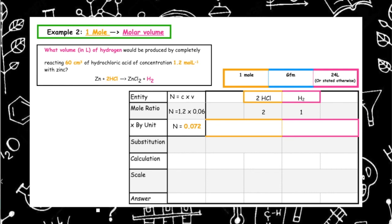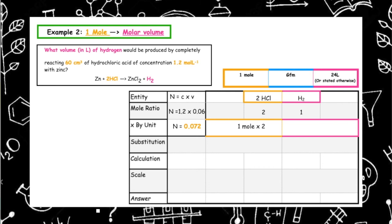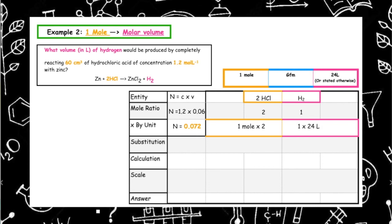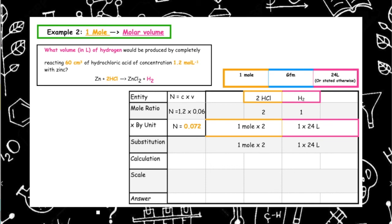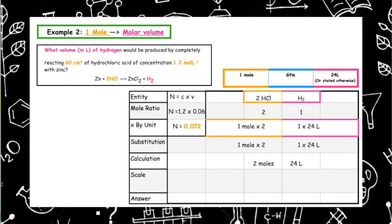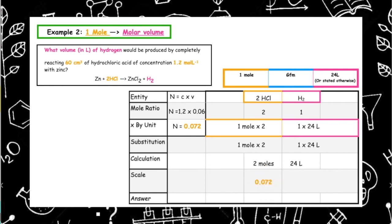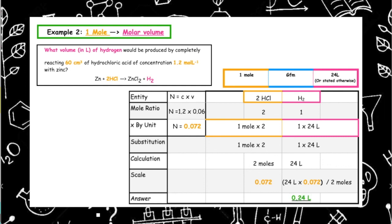The unit we multiply through by is 1 mole, so we write 1 mole times 2 produces 1 times 24 litres for the hydrogen. When we multiply that out, 2 moles of hydrochloric acid should produce 24 litres of hydrogen gas. However, we have 0.072 moles, not 2 moles. Cross multiplying: 24 litres times 0.072 moles divided by 2 gives a total volume of 0.24 litres of hydrogen gas.